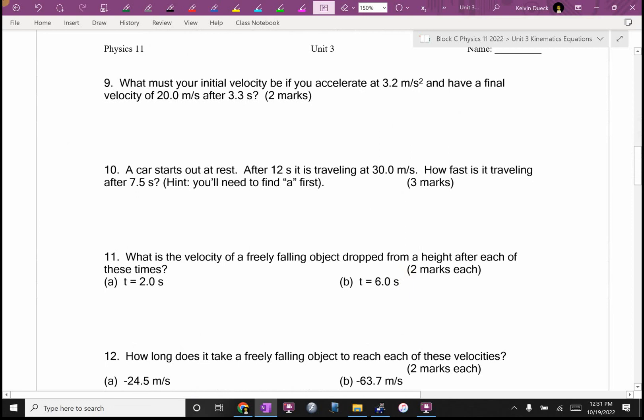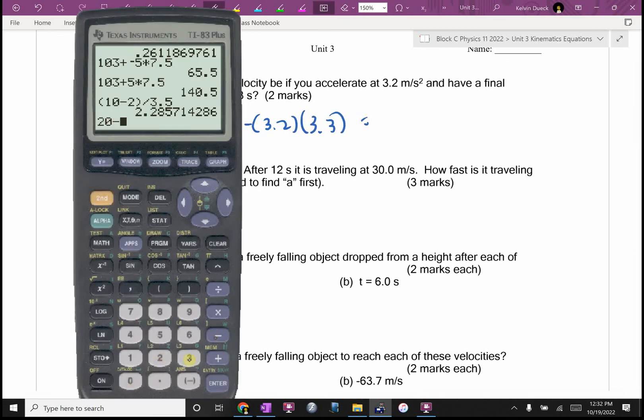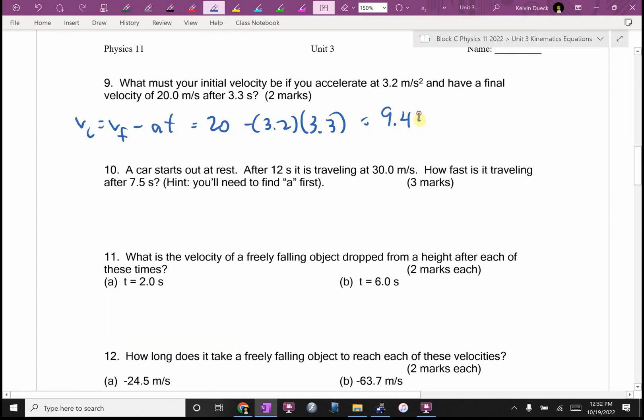What was your initial velocity? I guess VI would be VF minus AT. It would be VF 20 minus 3.2 times 3.3. And I get 9.44 meters per second.